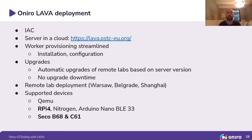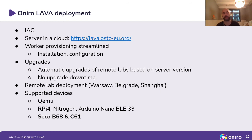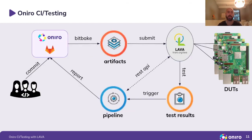Currently we have three remote labs: one in Warsaw, one in Belgrade, Serbia, and the third one in Shanghai, China. Supported devices currently in the Oniro project are QEMU, Raspberry Pi 4, Nitrogen, Arduino Nano, BL333, and from the SECO vendor, the V68 and C61 boards.